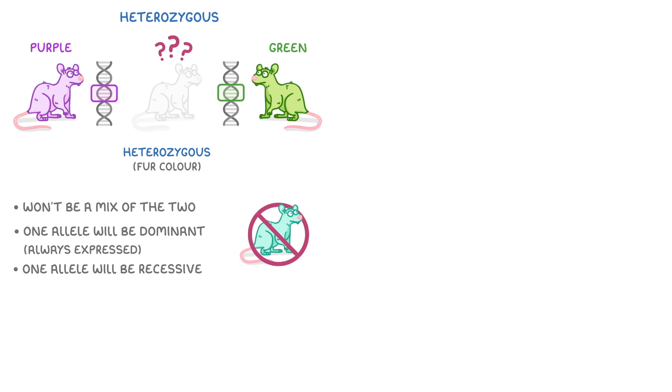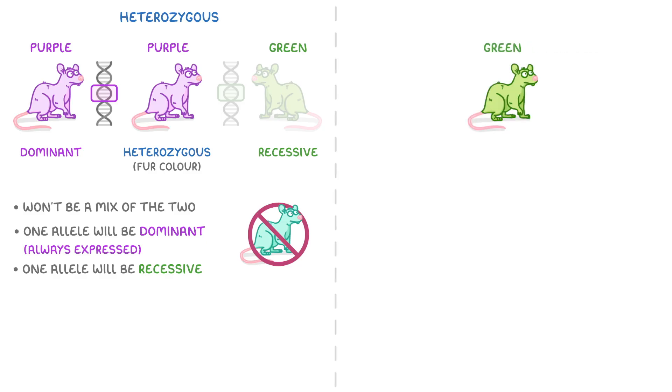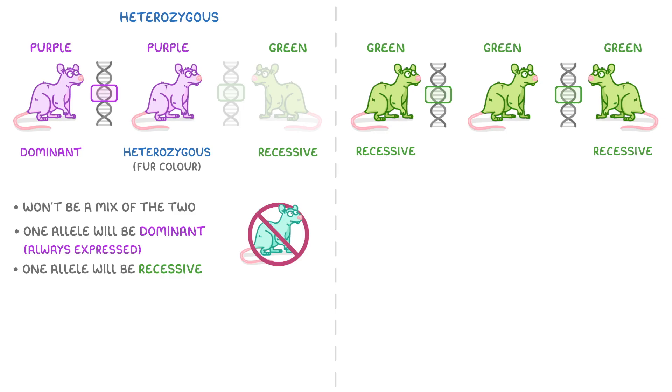So if the purple allele was dominant to the green allele, which would make that green allele recessive, then our heterozygous mouse would be purple. This means that the only way to have a green mouse is if both of its alleles were for green fur, which we would call homozygous recessive.